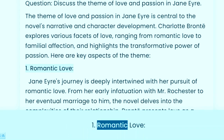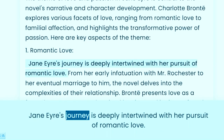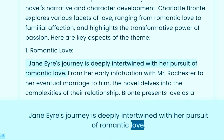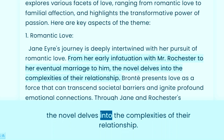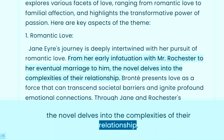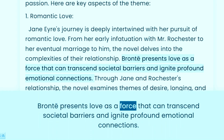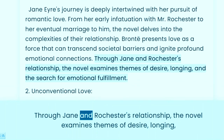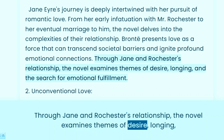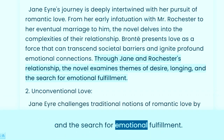1. Romantic Love. Jane Eyre's journey is deeply intertwined with her pursuit of romantic love. From her early infatuation with Mr. Rochester to her eventual marriage to him, the novel dials into the complexities of their relationship. Brontë presents love as a force that can transcend societal barriers and ignite profound emotional connections. Through Jane and Rochester's relationship, the novel examines themes of desire, longing, and the search for emotional fulfillment.